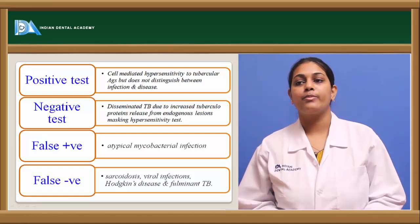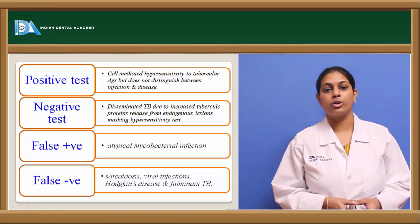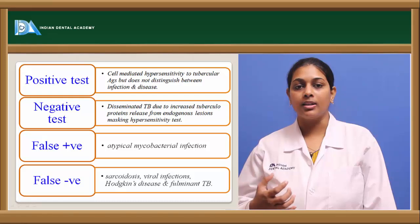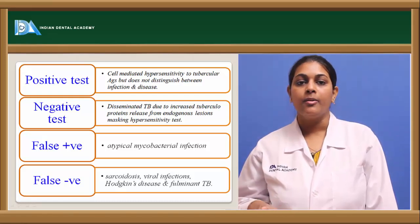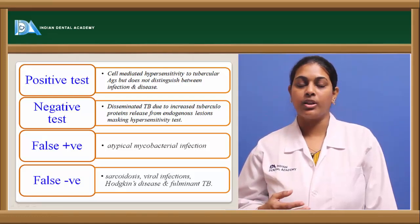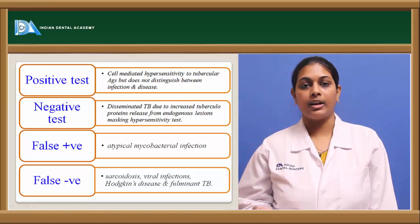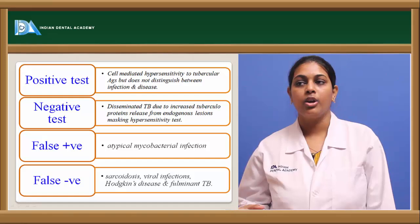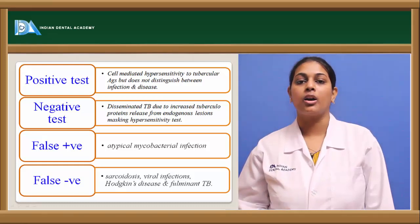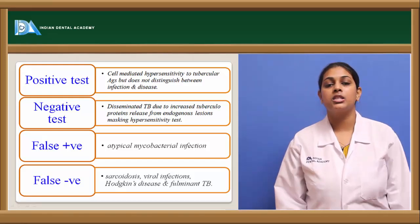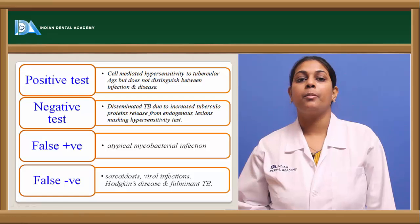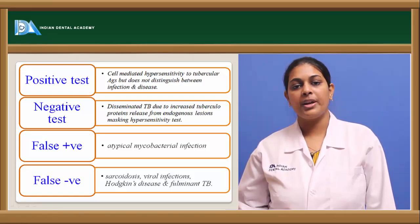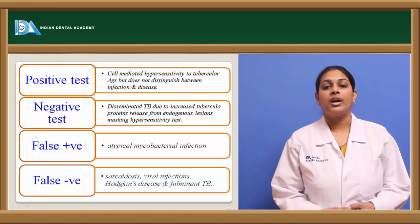Coming to the negative test: in disseminated cases of tuberculosis, where tuberculosis has spread throughout the body, these patients usually show a negative Mantoux test. This is because the endotubercle proteins released by the bacteria mask the hypersensitivity reaction, dominating over the T lymphocytes. A negative test does not necessarily mean the patient is not suffering from tuberculosis; further advanced diagnostic aids should be suggested.